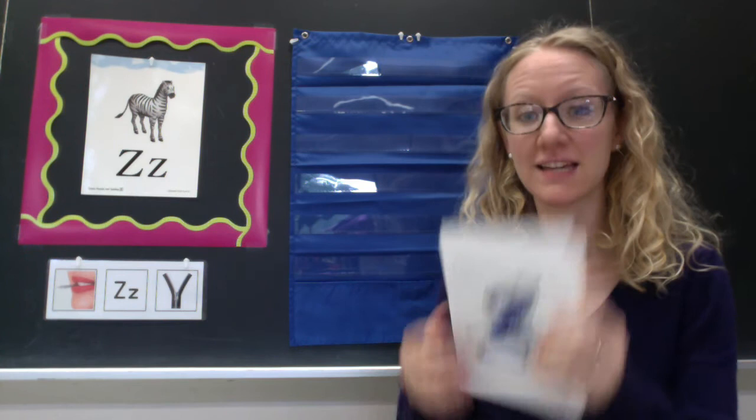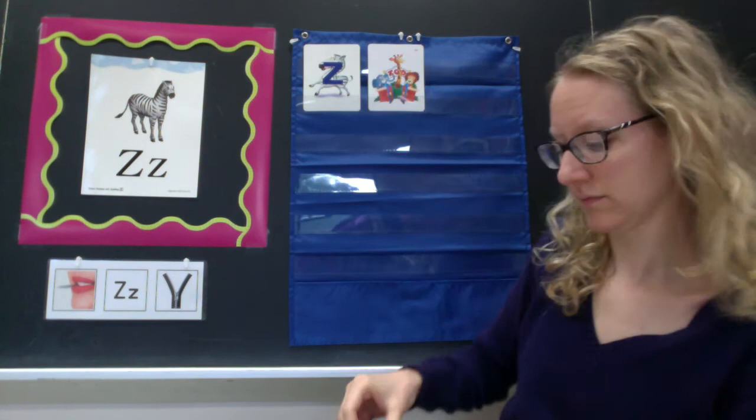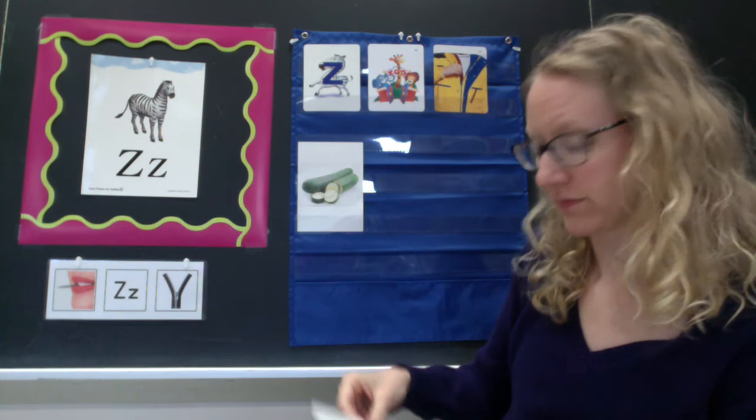My alpha friend for this week is Zelda Zebra, and we just met her a few minutes ago. A few other things I have that start with the letter Z include zoo, zipper, and zucchini. A zucchini is a type of vegetable.